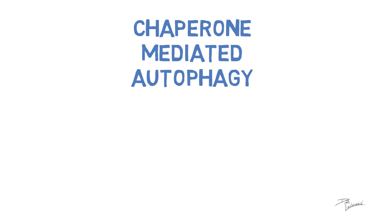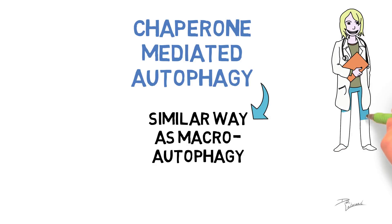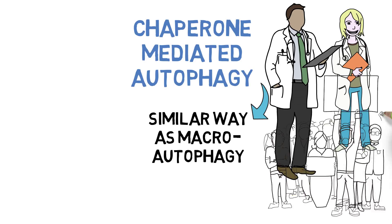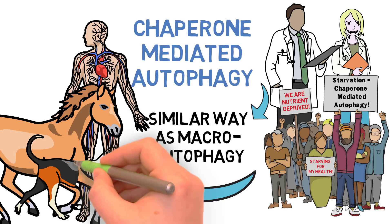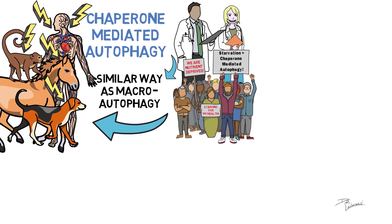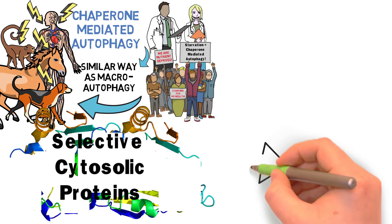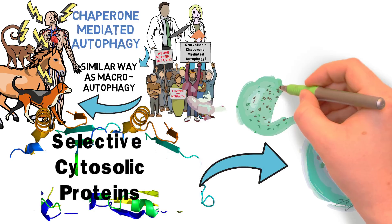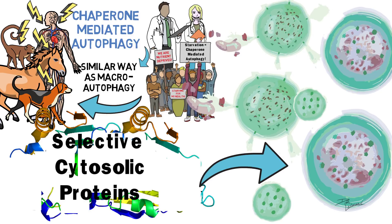The third is chaperone-mediated autophagy, which can be initiated through a similar way as macro autophagy. Scientists have found that the induction of this autophagy is also dependent on a state of nutrient starvation, as well as physiological stress in the human body and among mammals. However, with chaperone-mediated autophagy, the degradation of only selective cytosolic proteins that are present in lysosomes are targeted. An unfolding of a substrate protein involved in the process and present within the lysosome is required — a step that is not required for other types of autophagy.